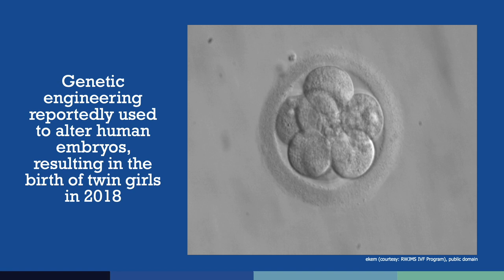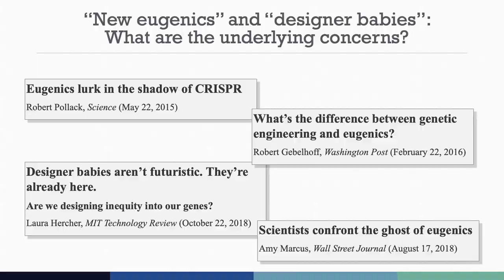The use of genome editing in embryos, such that changes would be passed on to future generations, is an area of scientific, legal, religious, and ethical debate. Since 2015, researchers have edited the genomes of embryos but stated they had not implanted those embryos into a person's womb. That changed in November 2018, when a scientist claimed that the first two children had been born with genes that had been edited in the embryonic stage — genome editing used in an attempt to confer immunity to HIV infection. This case brings attention to many profound ethical issues about potential applications of genome editing in humans. PGED has an entire lesson devoted to exploring this event and its implications in more detail.